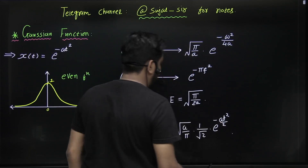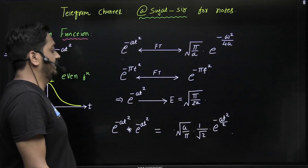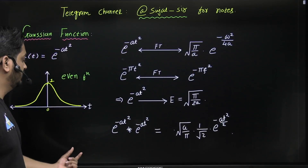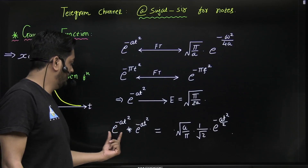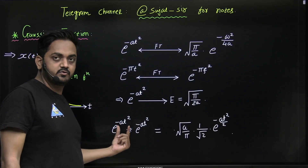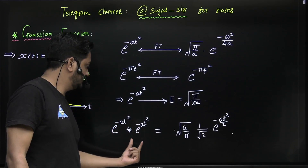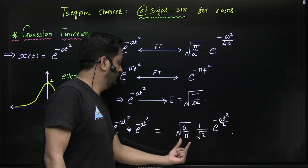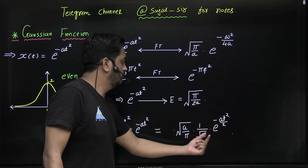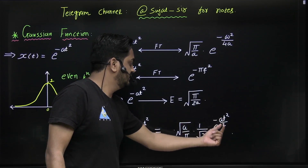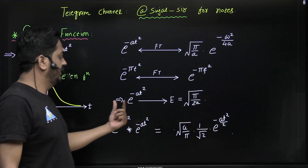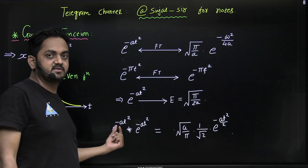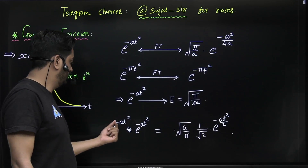To summarize: e^(-at²) convolved with e^(-at²) equals √(a/π) · (1/√2) · e^(-at²/2). Again you get a Gaussian function. You can substitute a = π to get the corresponding specific result.